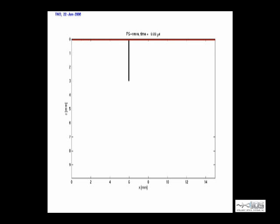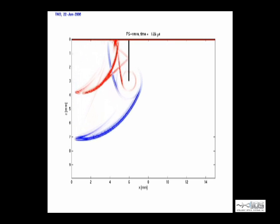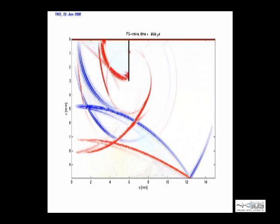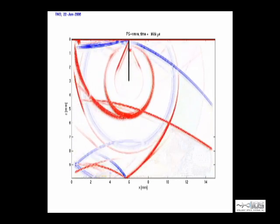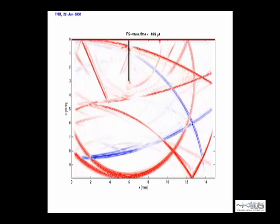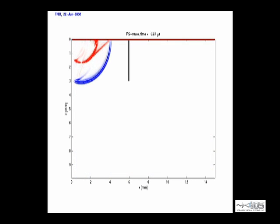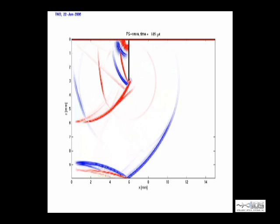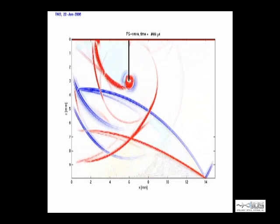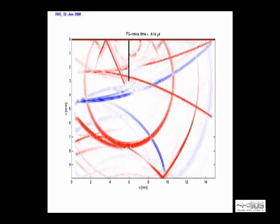We have simulated the waves that are generated and interact with a crack in this finite difference calculation. The laser-generated waves start at the upper left. Longitudinal waves are shown in blue and shear waves are in red. When the waves reach the crack tip, the diffracted waves appear as circles centered at this position. The diffracted waves eventually reach the surface opposite the crack, where they are detected and their arrival time is determined. The strongest arrivals are longitudinal waves, but mode-converted waves can also be detected.